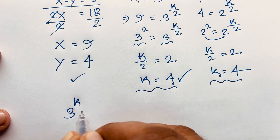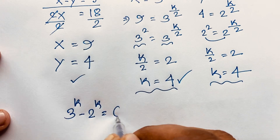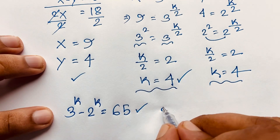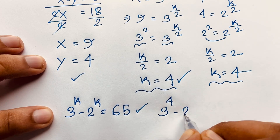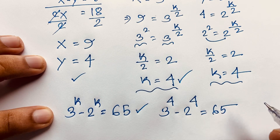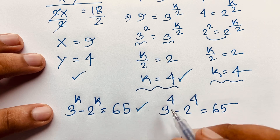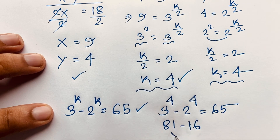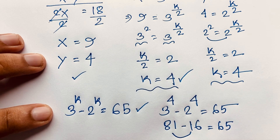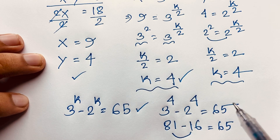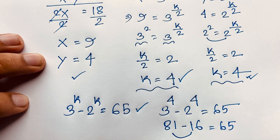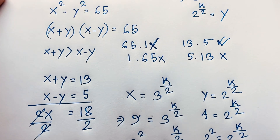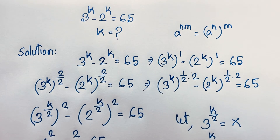Our question was 3 to the power k minus 2 to the power k equals 65. Let's verify: 3 to the power 4 minus 2 to the power 4 equals 81 minus 16 equals 65. Left-hand side equals right-hand side, so k equals 4 is our final answer. Thank you all — if you enjoyed this Math Olympiad question, please subscribe for other interesting videos. Goodbye, take care!